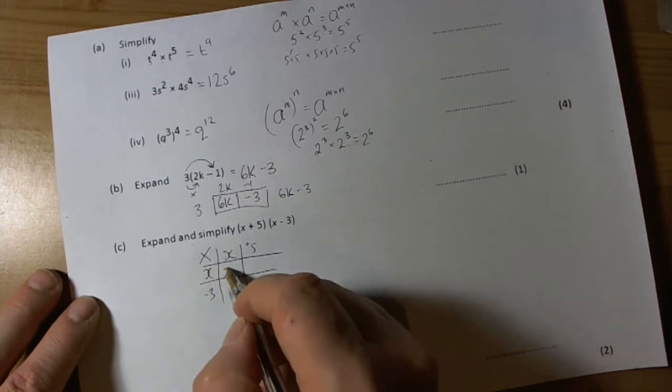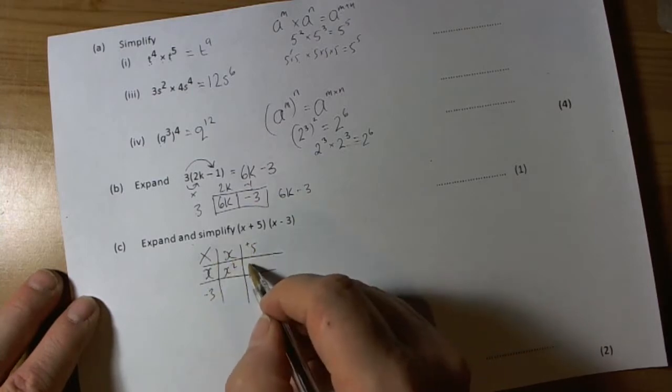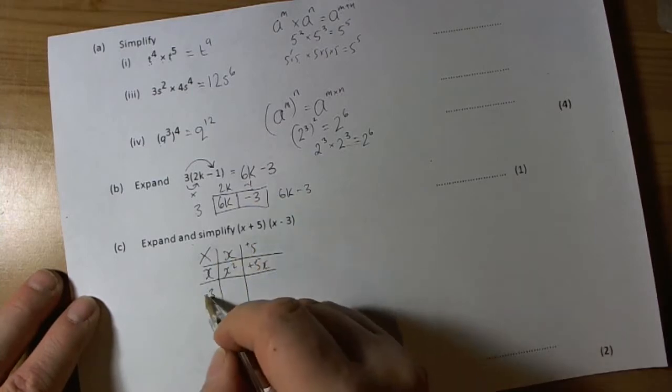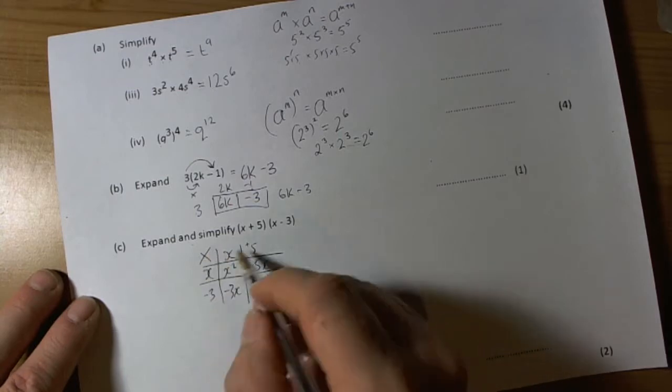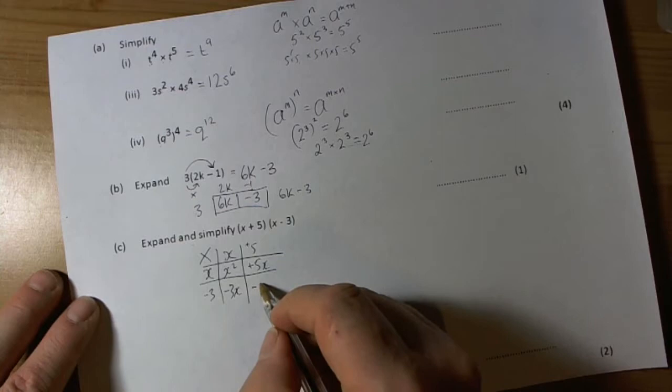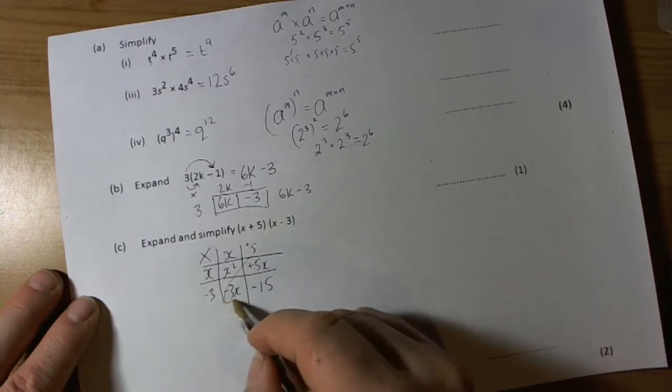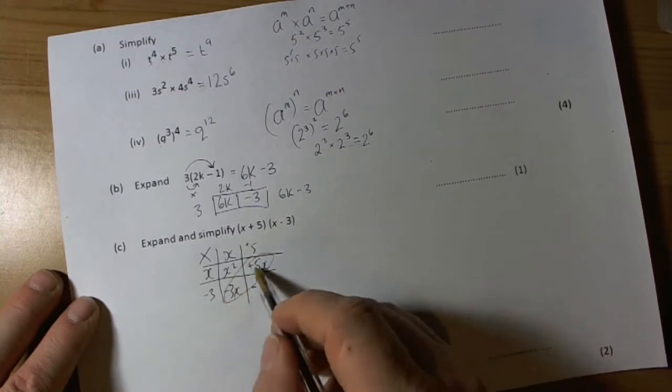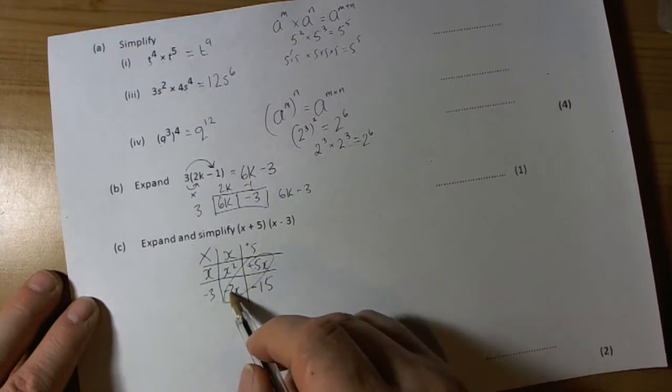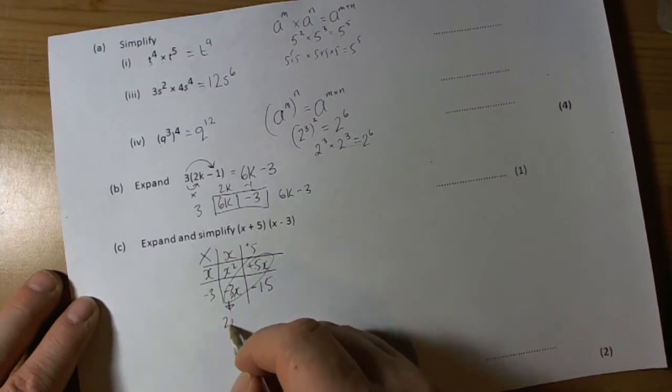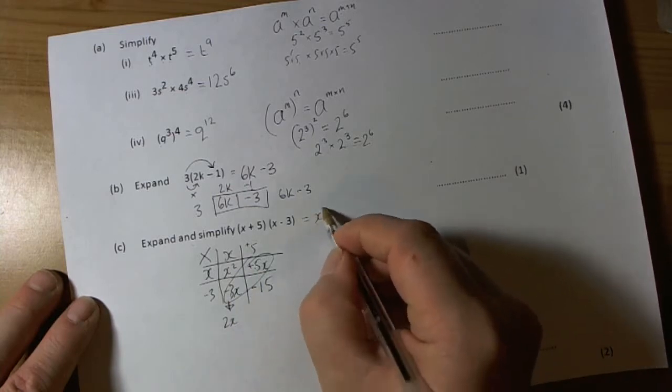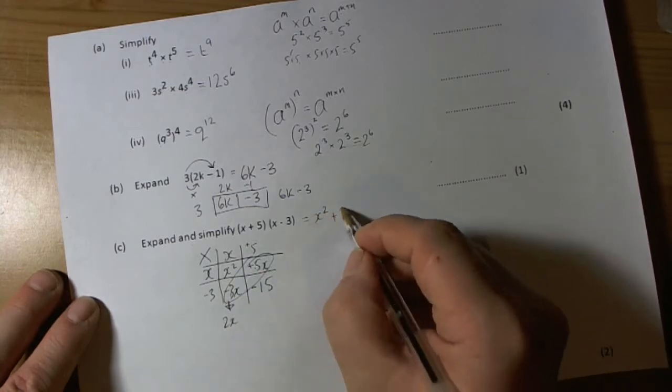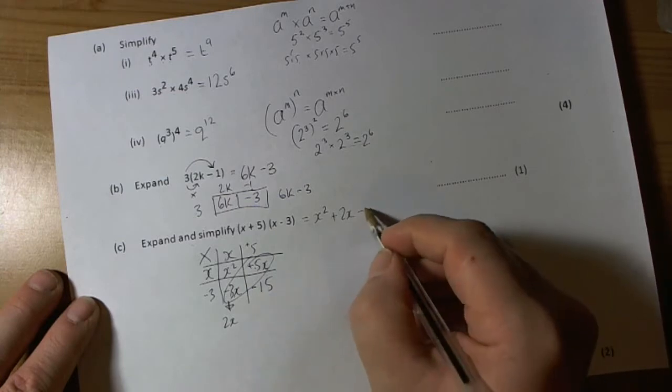So x times x is x squared. x times plus 5 is positive 5x. x times negative 3 is negative 3x. And negative 3 times negative 5 is negative 15. We can see here we've got two like terms. So we've got 5x's take away 3x's, so that's going to leave me with 2x. So altogether out of here then I get x squared plus 2x minus 15.